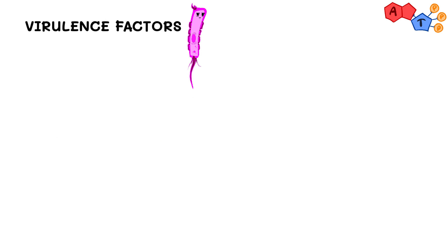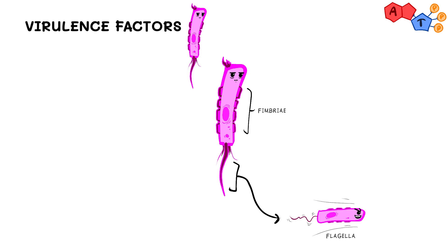Proteus possesses certain virulence factors that enable it to cause disease. First of all, Proteus mirabilis exhibits flagella that allows the organism to be freely motile. Also, it possesses fimbriae that facilitates its attachment to the epithelium of the host tissue, and in our case it's the uroepithelial cells of the urinary tract.